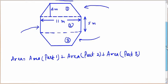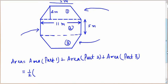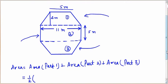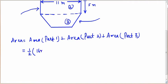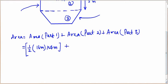The area formula for a trapezium is half into sum of parallel sides into height. The sum of parallel lines is 5 meters plus 11 meters, that is 16 meters, and the height is 4 meters. The area of the second part, the rectangle, is length into breadth: 11 into 5. The area of the third part is the same as the first because both are trapeziums, so again half into sum of parallels into height.